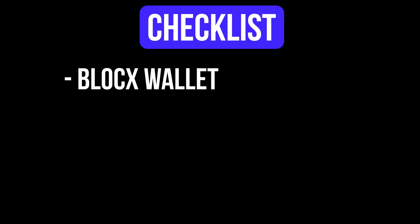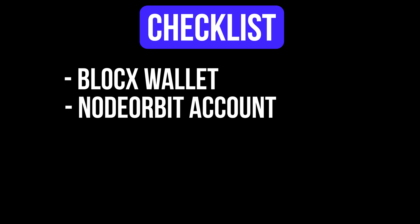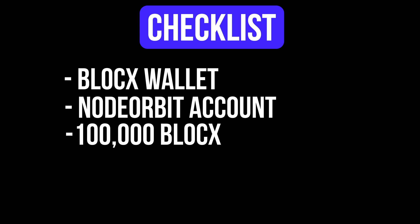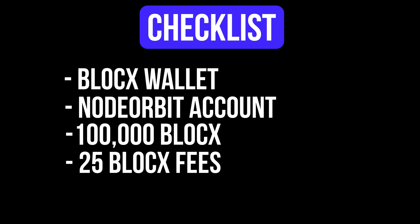We'll be installing the BlockX wallet. If you do have Linux available, the Linux wallet is definitely more secure, so you can go ahead and proceed with that if you're comfortable with it. The next thing you're going to need to do is create an account with NodeOrbit — I'll link that in the description below. You're also going to need the collateral for a BlockX node, which is 100,000 BlockX, plus a little extra for transaction fees, so I added an extra 25,000 BlockX. That's what you need to get started — let's get to it.